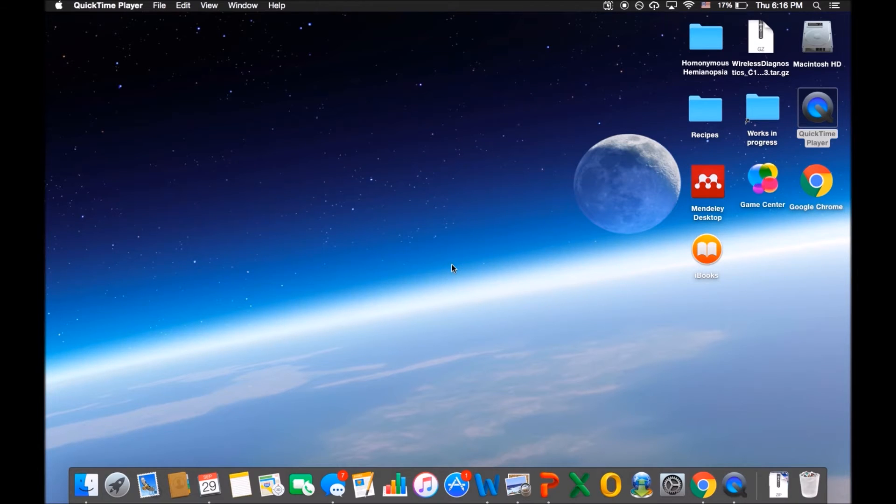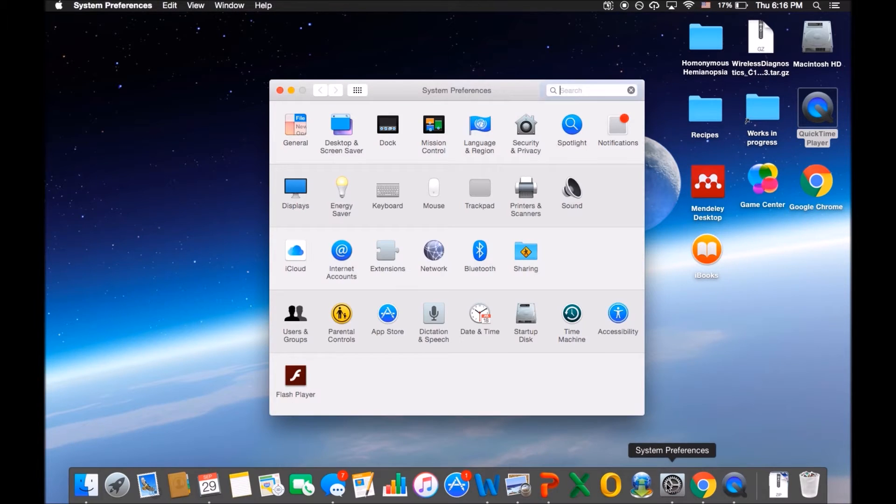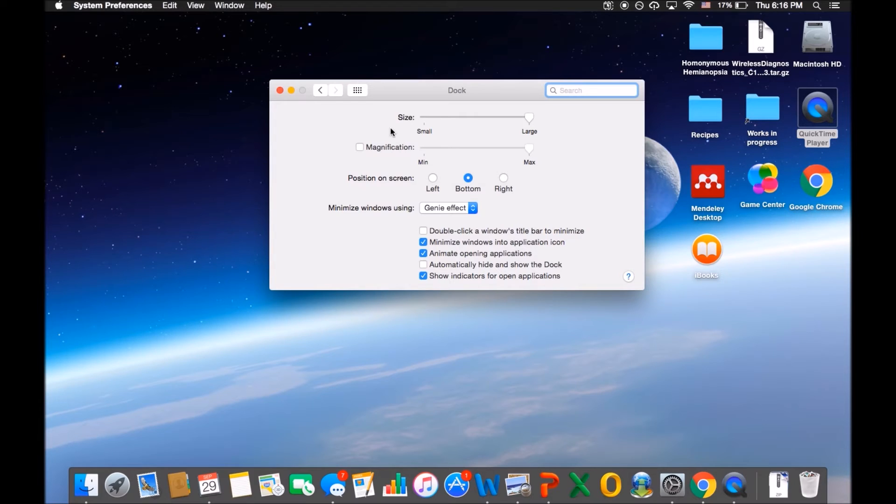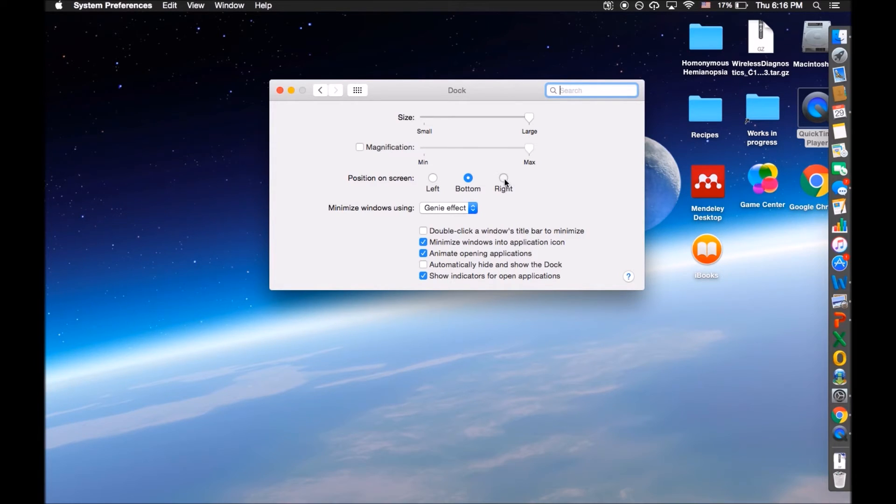We can also move the toolbar to the right by going to System Preferences, then Dock. For position on screen, we select Right. We then check the box next to Magnification to increase the size visibility of the icon.